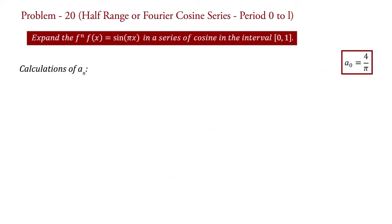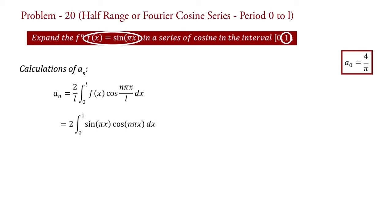Now for aN: aN equal to 2 upon L, integral 0 to L of f(x) cos(nπx upon L) dx. Substituting the values of f(x) and L, we have aN equal to 2 times integral 0 to 1 of sin(πx) cos(nπx) dx.